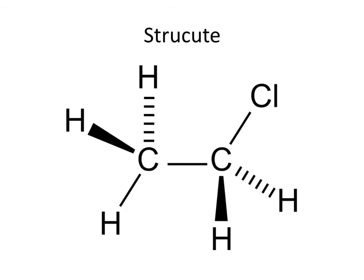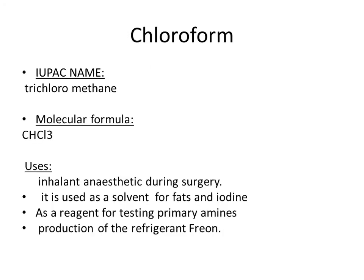You can see the structure. 'Eth' means two carbons are available. According to ethane it is C2H6, but for ethyl, one of the hydrogens is replaced by a chlorine group, which is why it is also called chloroethane. The next compound is chloroform — three chlorines are there, which is why it is called trichloromethane. The general formula is CHCl3.